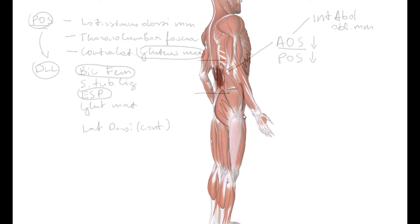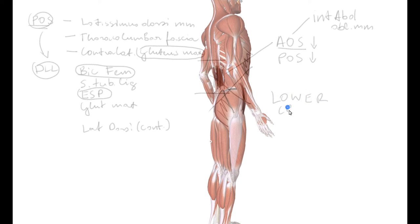With weak gluteals of the posterior oblique system and weak abdominal obliques of the anterior oblique system, we will observe tight erector spinae muscle group especially at the lumbar region, and tight deep hip flexor muscles from the front — so the iliopsoas is going to be tight. There is a name for this situation: Lower Cross Syndrome.